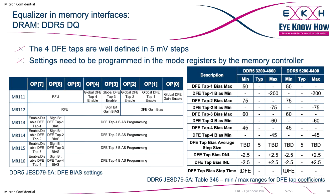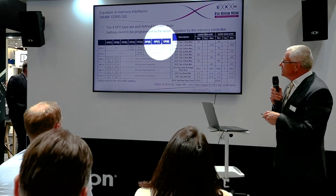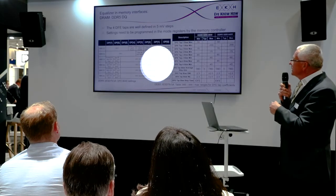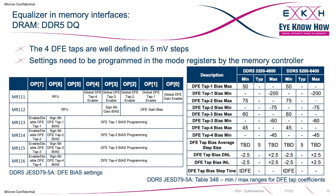This is what the memory allows us to program. We have mode registers that allow enabling and disabling the DFE globally, enabling individual taps, and adjusting the gain bias — positive or negative. The DRAM allows a bias range of up to +50 millivolts to shift the waveform up, or down to −200 millivolts. The first tap allows a wide range of adjustment while later taps have less range. The controller determines the best settings during training and writes the appropriate mode registers to ensure the DFE works correctly.